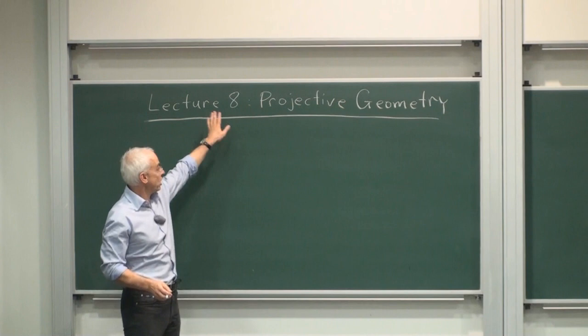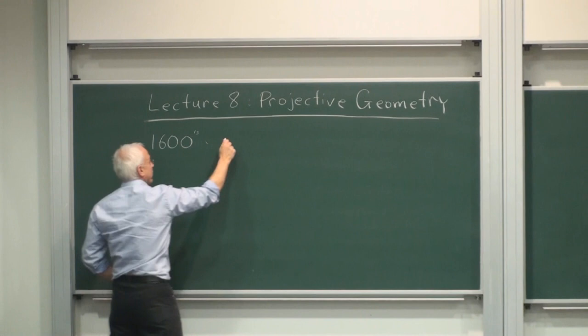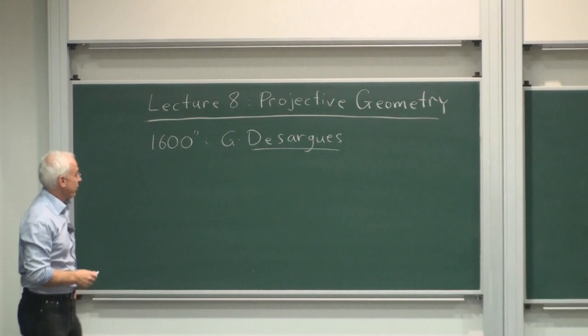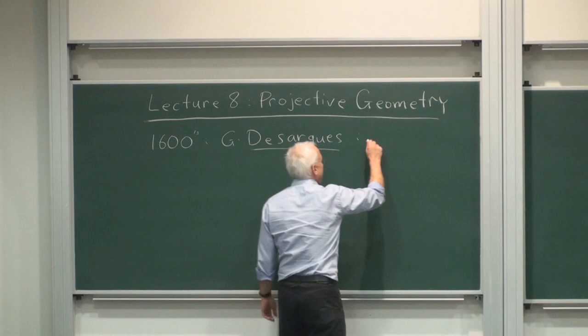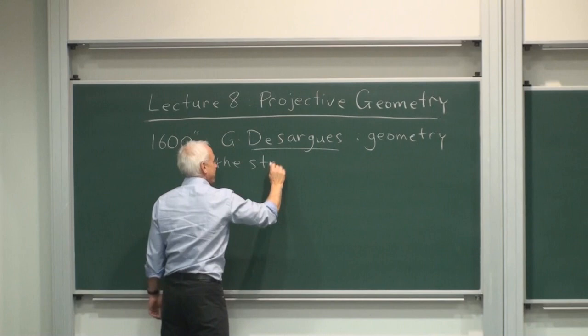Good afternoon. I'm Norman Wildberger and today we're going to talk about projective geometry. It's the eighth lecture in this course in the history of mathematics. Projective geometry really begins in the 1600s with the work of Gerard Desargues, a French mathematician and engineer who realized that there was an alternate kind of geometry that only involved a straight edge. This is in some sense the simplest of all possible geometries — the geometry of the straight edge.